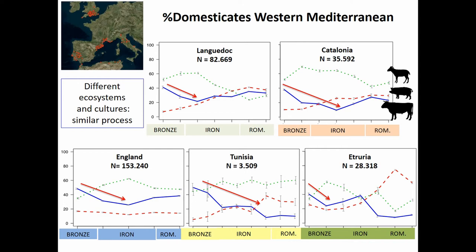Also in Tunisia, the cattle frequencies are still declining in Late Antiquity. And in North-Central Italy, the tendency happens earlier — there is a reduction during the Iron Age, but then as soon as Etruscan civilization starts, we find more cattle. And then there is the Roman phenomenon: they are crazy about pigs, and that is a different story.